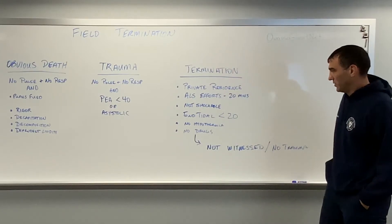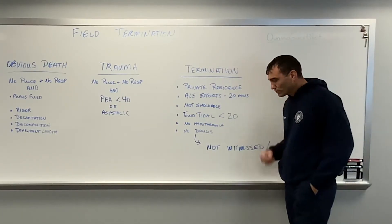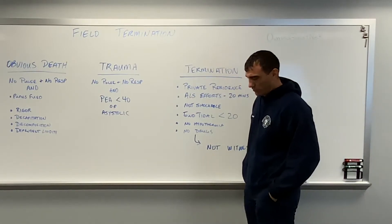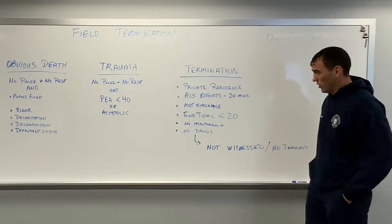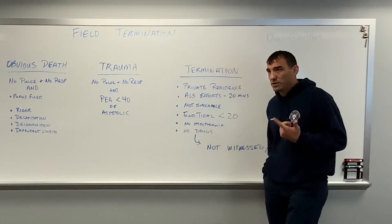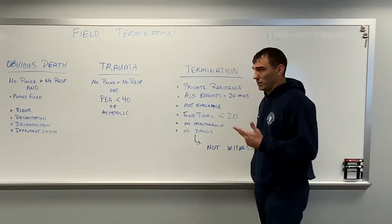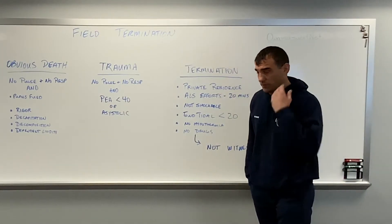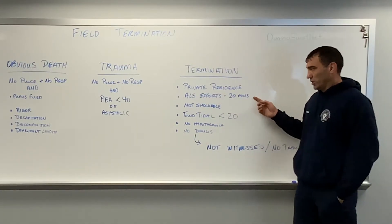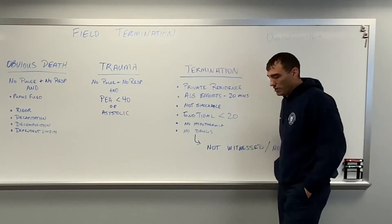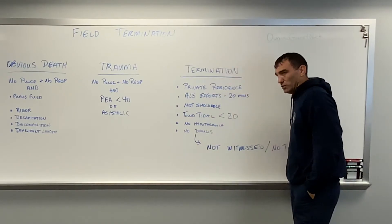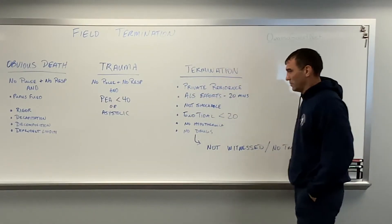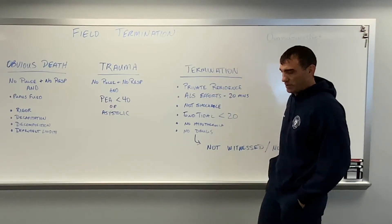Next, all ALS efforts have to have happened and they have to have happened for 20 minutes. There's sometimes contention about when this clock starts. Technically by the book, until all things are in place the 20-minute clock doesn't start. All ALS efforts means you have to have a monitor on the patient, CPR, an advanced airway — Kings and iGels do qualify — an IV or IO, and medications given. There should not be a rush to get to this 20-minute mark.